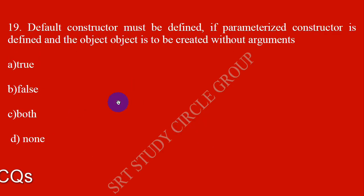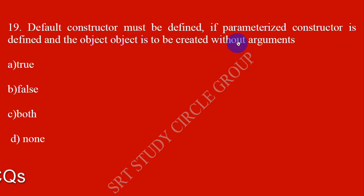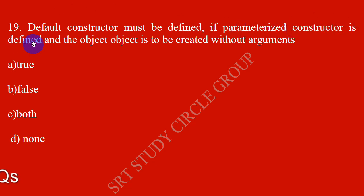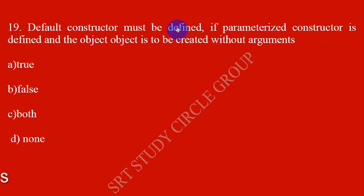The default constructor must be defined if a parameterized constructor is defined and an object is to be created without arguments. So if a parameterized constructor exists and you need to create an object with zero arguments, you must define a default constructor. That is true.